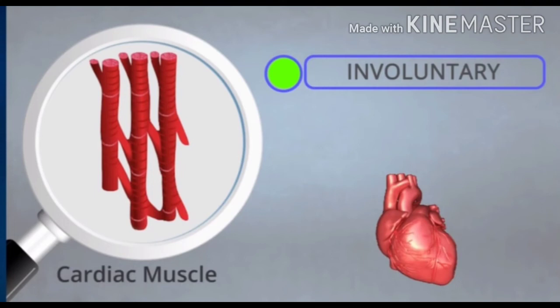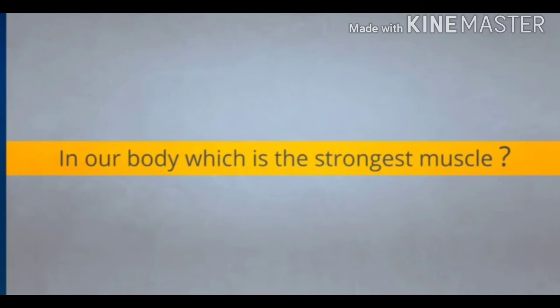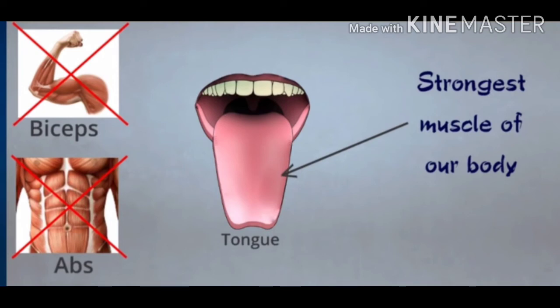So these were the muscles we discussed — muscular tissue. Now we will proceed to nervous tissue. But first, did you know the strongest muscle of our body? The tongue is our strongest muscle. You might have thought about biceps or abs, but no — the tongue has no bones and is the strongest muscle because we need energy to speak, and the tongue keeps on working continuously.